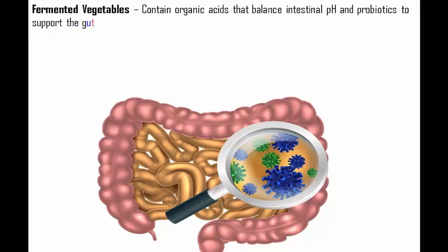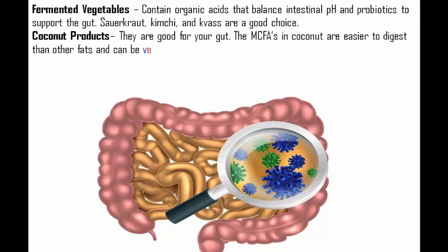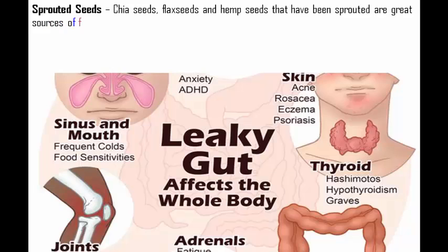Three: fermented vegetables — they contain organic acids that balance intestinal pH and probiotics to support the gut. Sauerkraut, kimchi, and kvass are good choices. Four: coconut products — the MCFAs in coconut are easier to digest than other fats and can be very helpful for your gut.